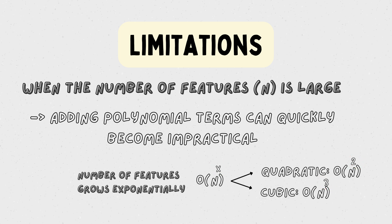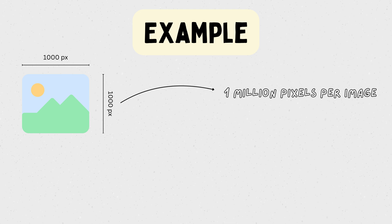To make this clear, let's use a computer vision example. Imagine you have a high-resolution image of 1000 by 1000 pixels—that's a million pixels per image. If you were to use logistic regression for a classification task, each pixel would be a feature.